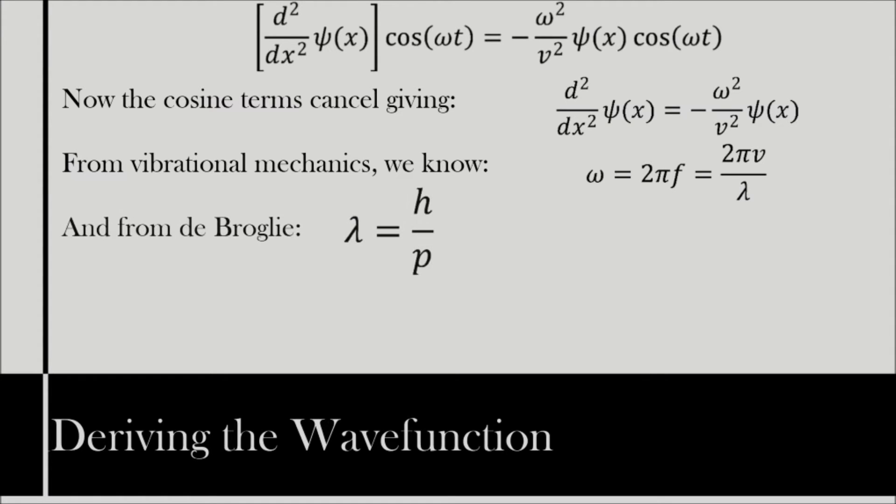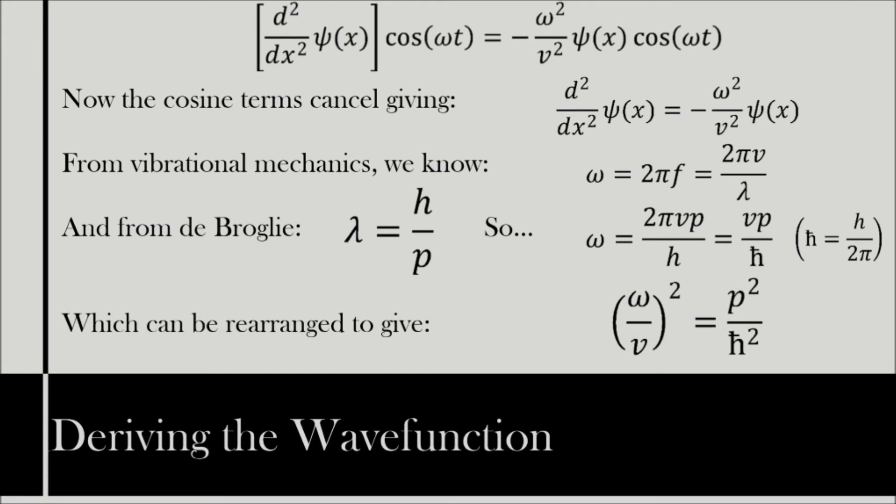And that from Louis de Broglie, we have λ equals h over p, we can obtain via substitution ω equals 2πvp over h, which equals vp over ℏ. This can be arranged into the form (ω/v)² equals p² over ℏ². This form is convenient as the left hand side is the same as a term we are looking to replace on the right hand side of the classical wave equation.